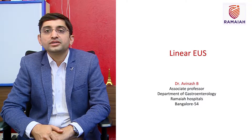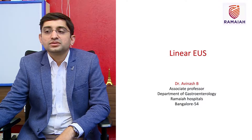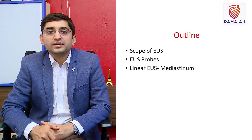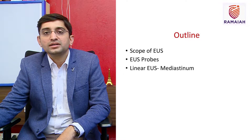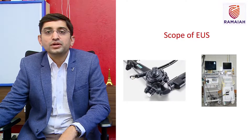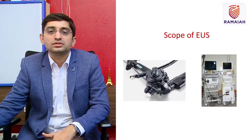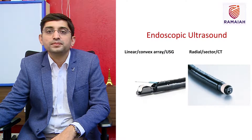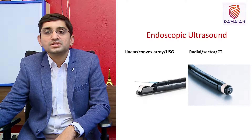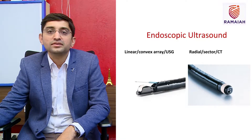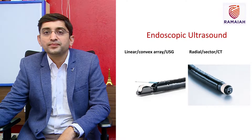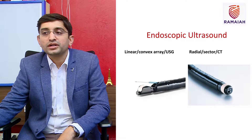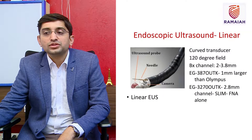The topic is the language of linear endoscopic ultrasound. The outline covers the scope of EUS, the different probes used, and predominantly what mediastinal windows we are going to see. Endoscopic ultrasound has two processors and two monitors — one for endoscopic, one for ultrasonic — and both should be in good position at the head end of the patient, with the right end of the endoscope free for managing both the knobs of the endoscope as well as for the monitors.